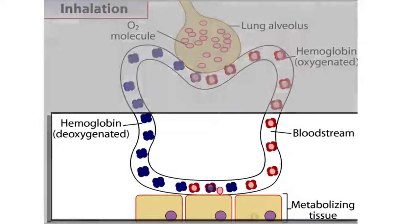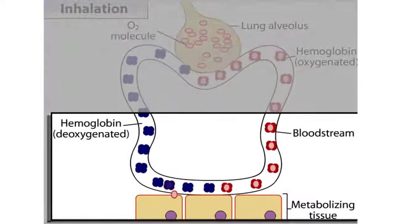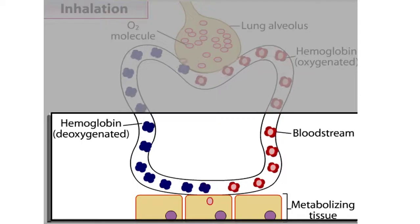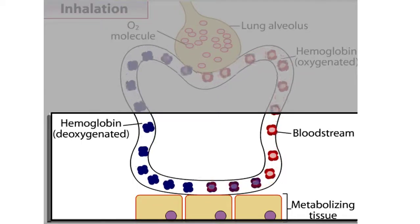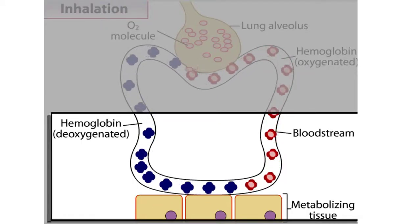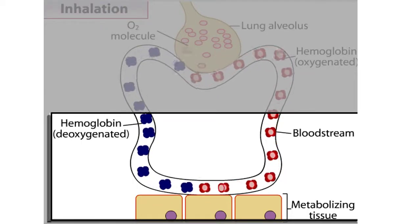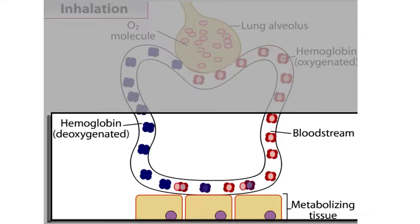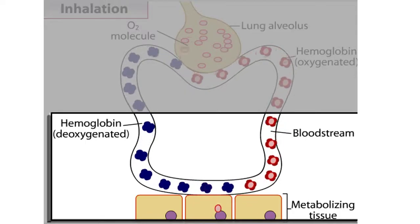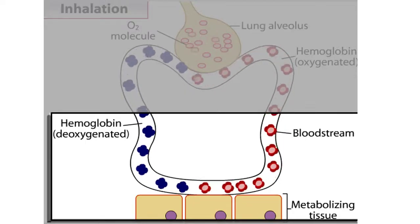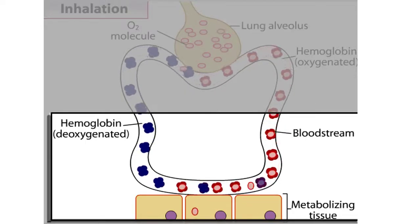Where oxygen concentrations are low, such as in metabolizing tissues, hemoglobin releases oxygen. The oxygen diffuses into the cells and is used in cellular respiration.